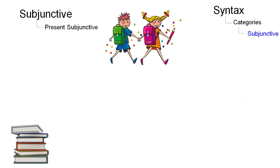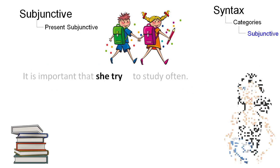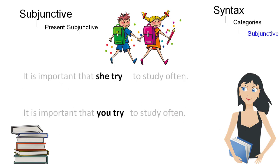Sometimes the subjunctive cannot clearly be recognised. In the examples 'it is important that she try to study often' and 'it is important that you try to study often,' it is clear that the subjunctive form 'you try' remains unchanged, whereas the subjunctive form 'she try' differs from the normal simple present form 'she tries.'